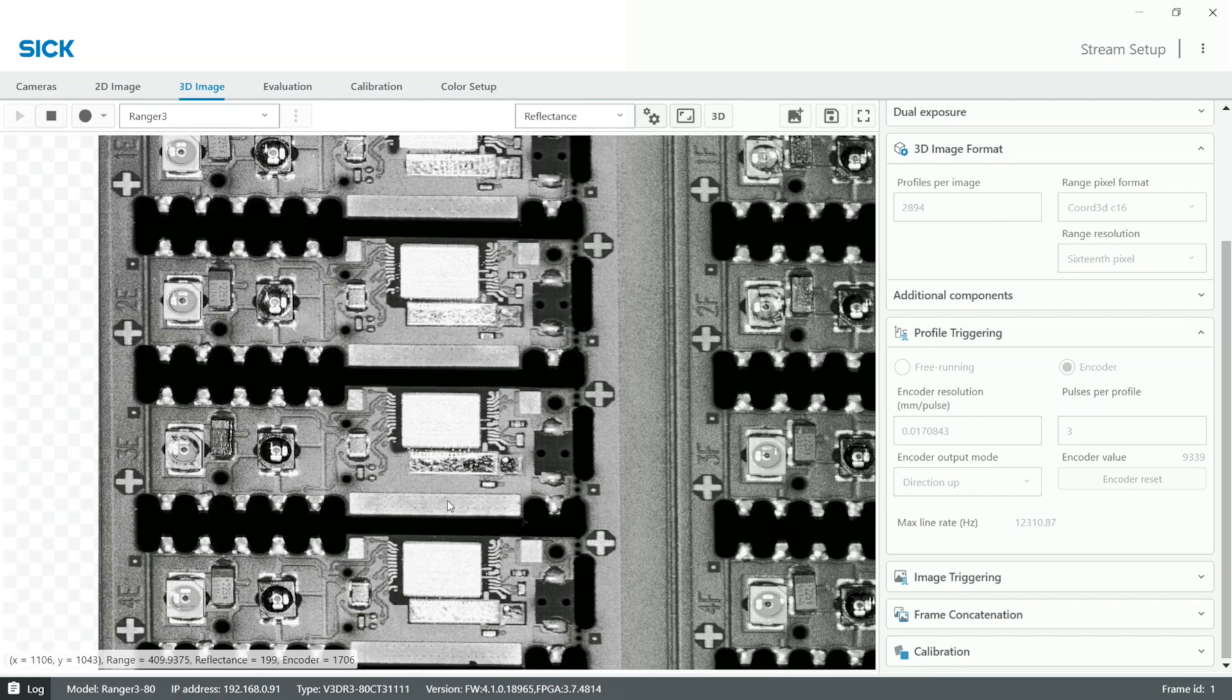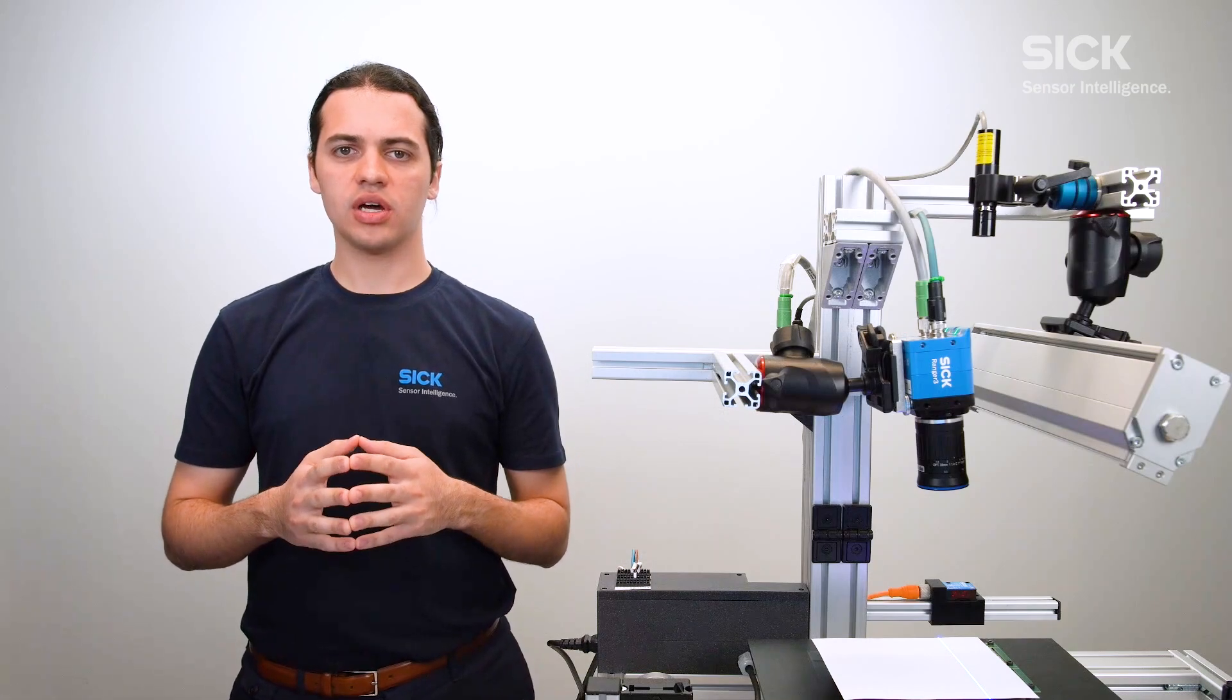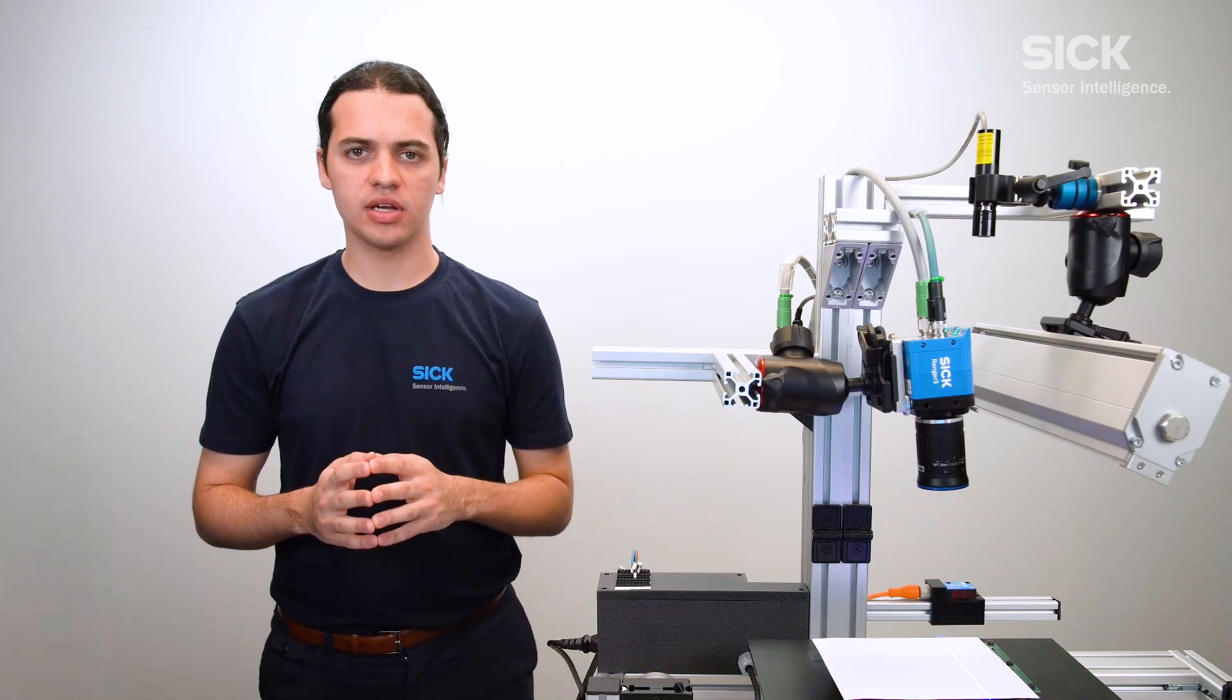So let us now enable the color component so we're able to inspect all those things. Start by navigating to the color setup tab and enabling the color component.